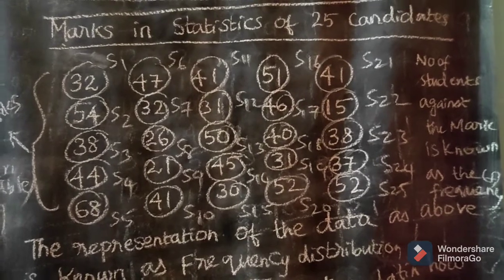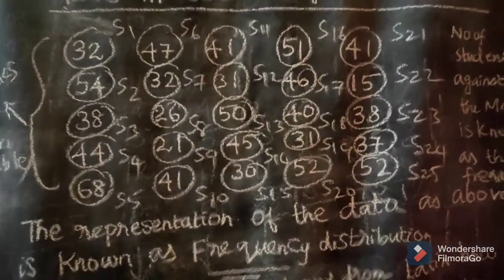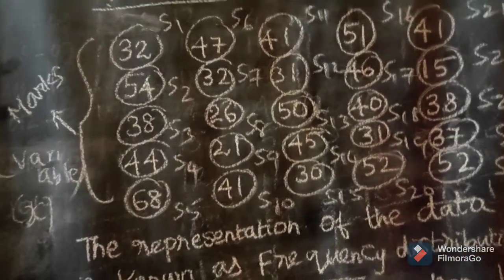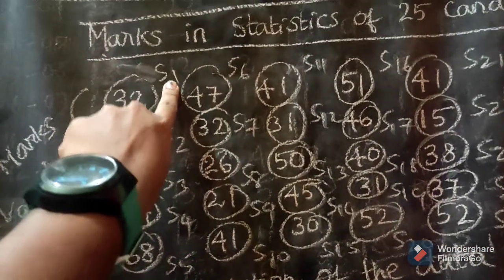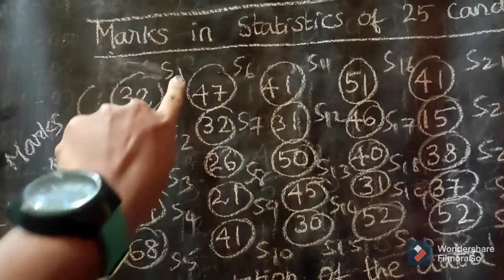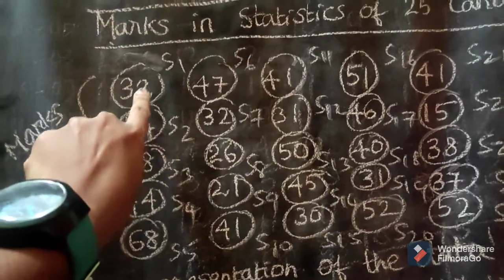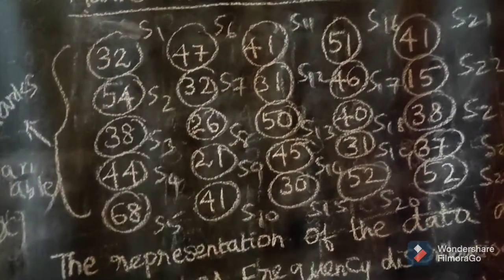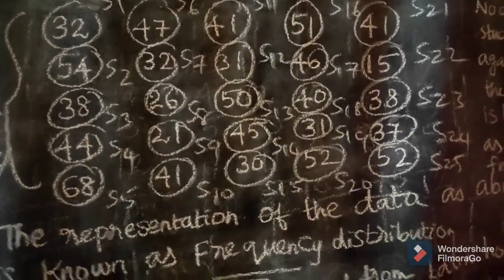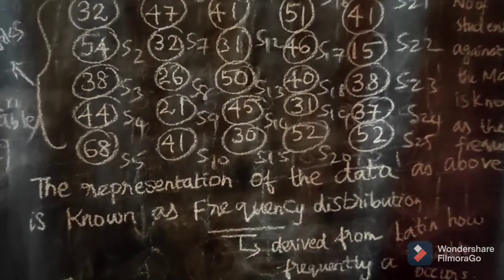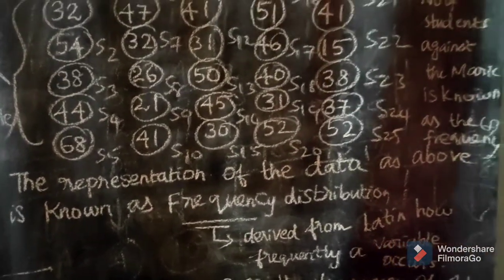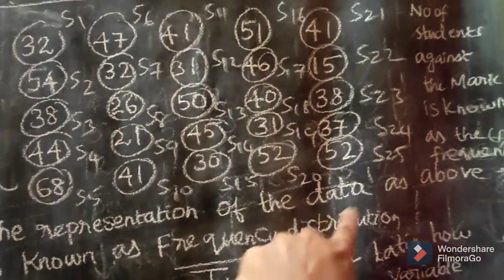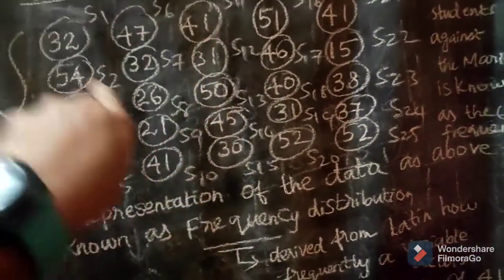The number of students and their marks form an operator — frequency f. In the frequency table, S1, Student 1 has frequency 32 because their mark is 32. So that is the frequency. Frequency distribution is a representation of the data as shown above.